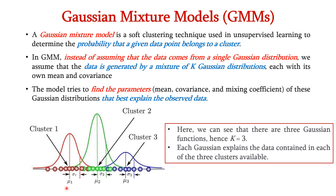We can also see that each Gaussian component has its own mean and covariance, expressed as mu1, sigma1, mu2, sigma2, and mu3, sigma3 respectively.